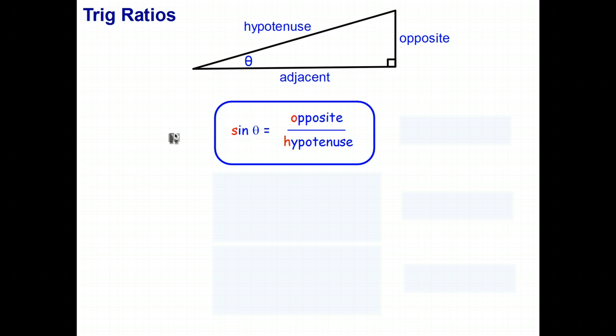And it turns out there's 3 ratios that we commonly use. So the first one is called the sine ratio, spelled S-I-N-E, but we just abbreviate it as S-I-N. So the sine of angle theta is just that length, the opposite, over that length, which is the hypotenuse. So sine is opposite over hypotenuse. And if we want to, we can abbreviate that as just S-O-H. Sine is opposite over hypotenuse.